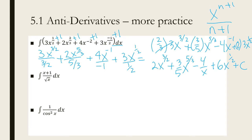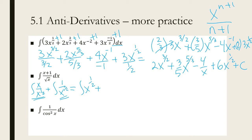For this next problem, the denominator is shared by the two things on top, so I'm going to rewrite this as the integral of x over x to the 1/2, plus the integral of 1 over x to the 1/2. I can simplify each: x divided by x to the 1/2 is really just x to the 1/2, because 1 minus 1/2 is 1/2. And 1 over x to the 1/2 becomes x to the negative 1/2.